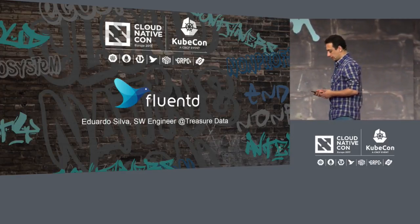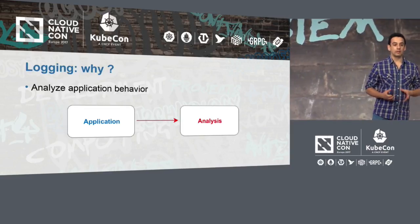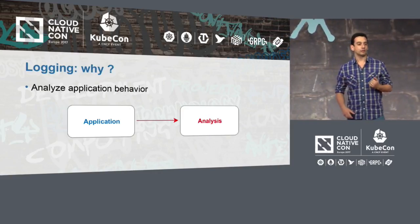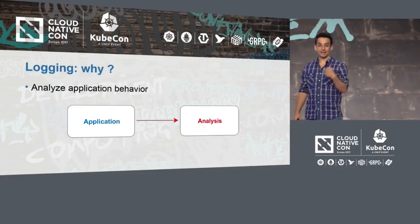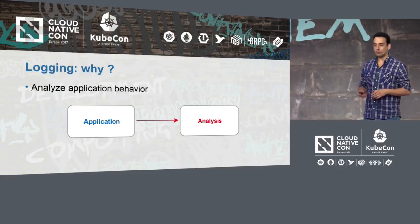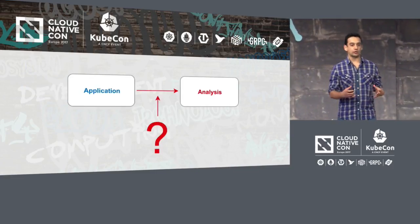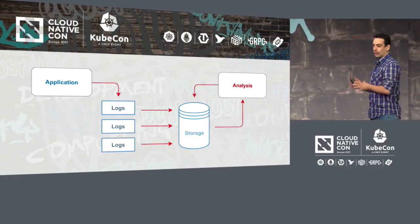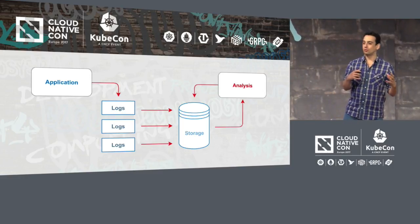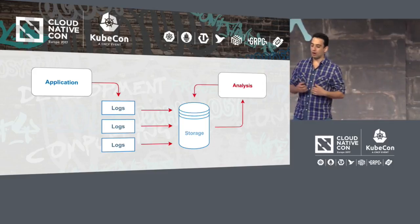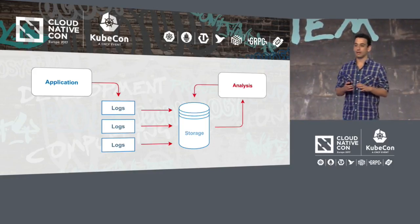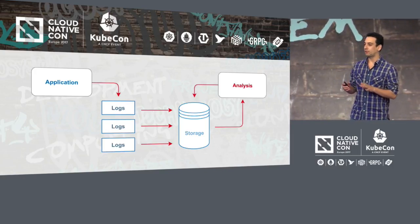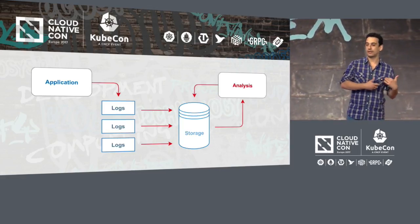I cannot start talking about FluentD without talking about logging. When you think about FluentD, you need to think about just one word: logging. Logging exists because at some point you would like to analyse how your applications are behaving. We need to figure out how to get information from the applications, because we want to analyse that kind of data. The usual way is to make applications generate messages — saying how they are working, if there are errors, if there are warnings. Most of this information is stored in logs, which can be any kind of file in the file system.